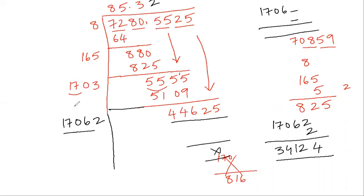So the answer is: the square root of 7280.5525 is equal to 85.32. Now this is the way, students, a long division method happens. All the best. Thank you.